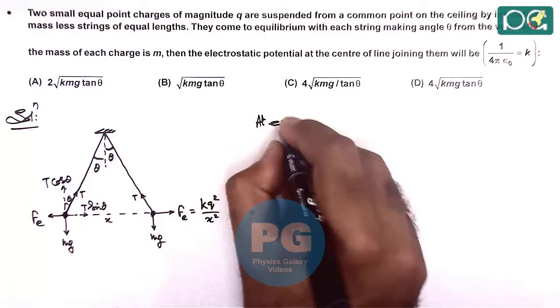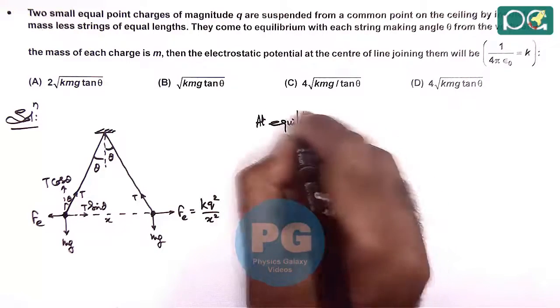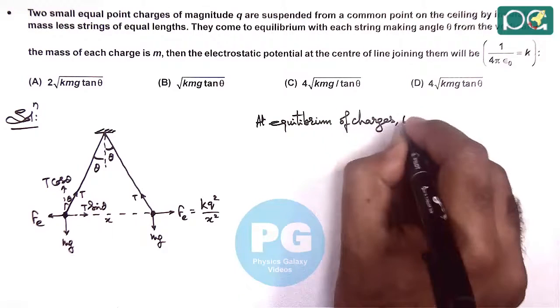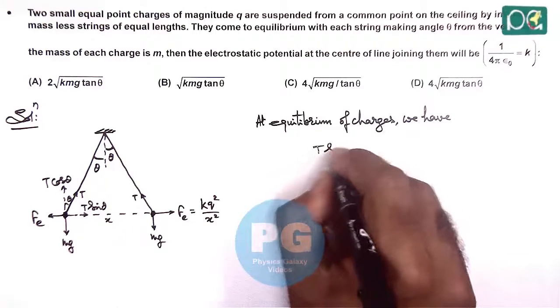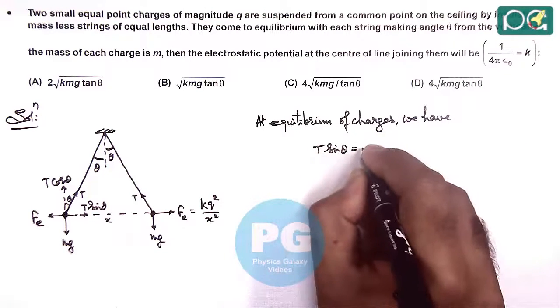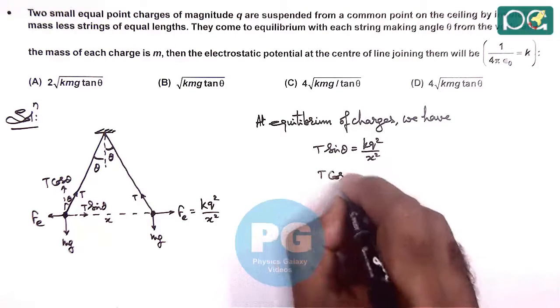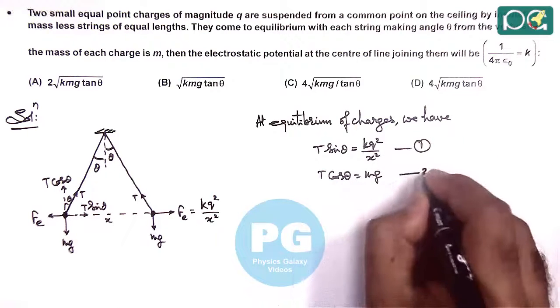At equilibrium of charges, we have T sin theta equals Kq² by x², and T cos theta equals Mg. These are equations 1 and 2.